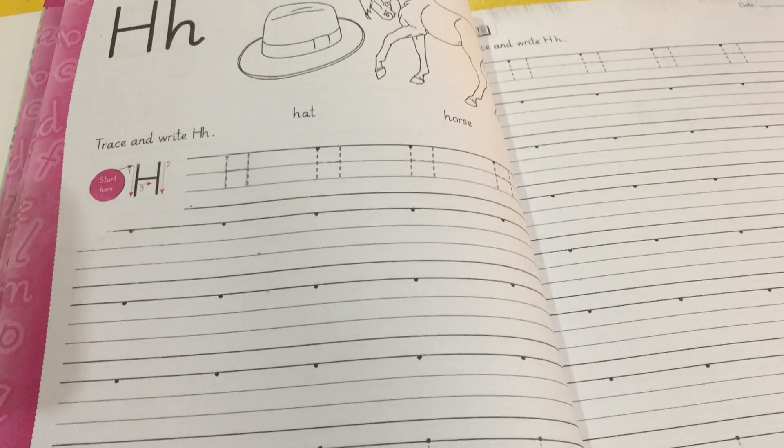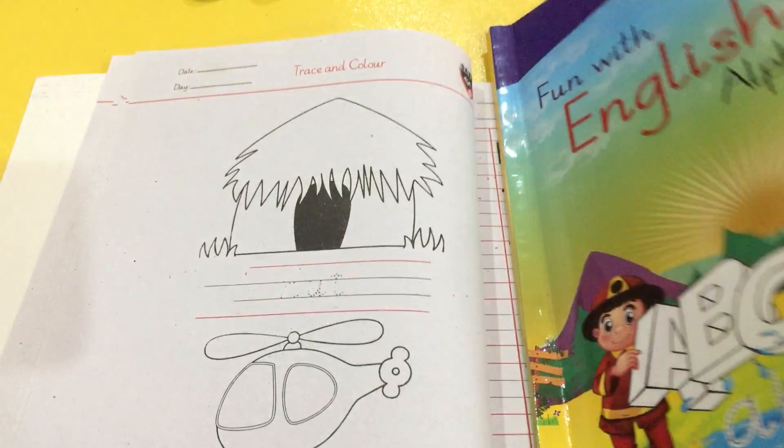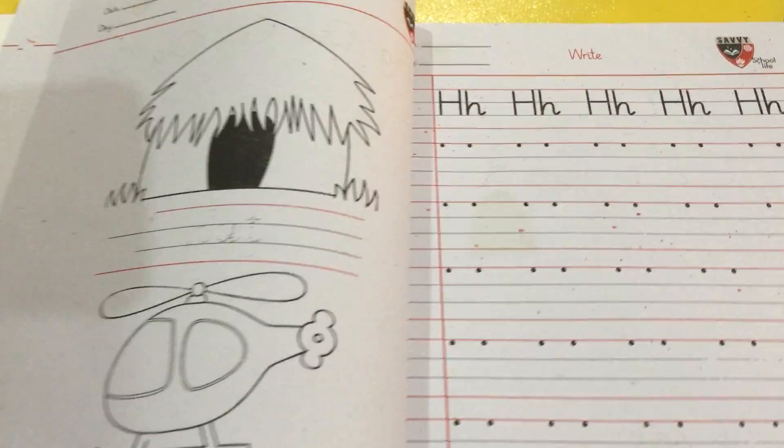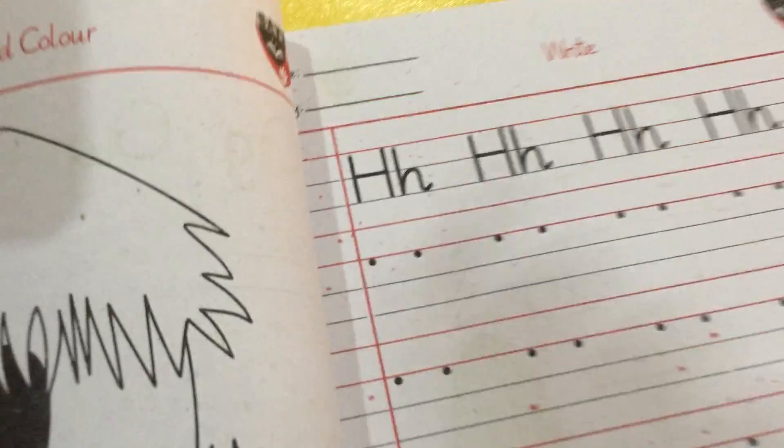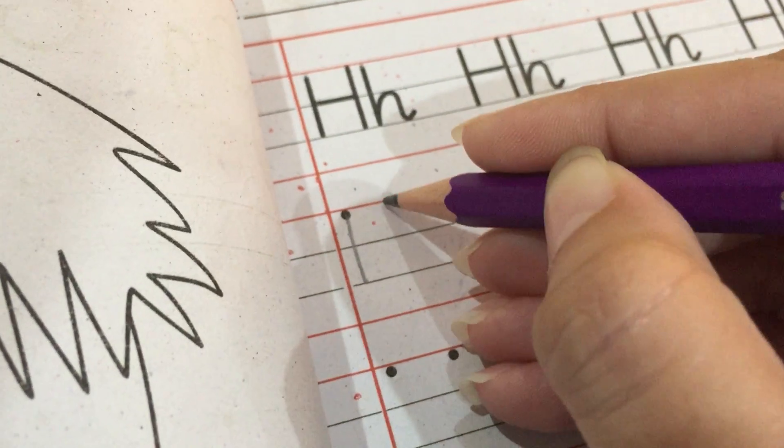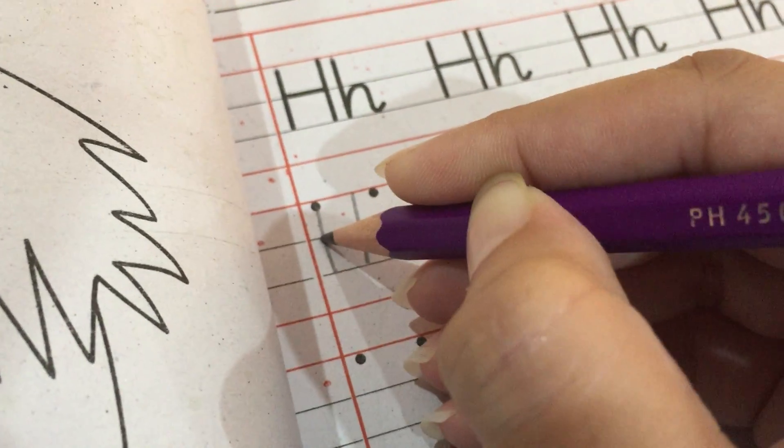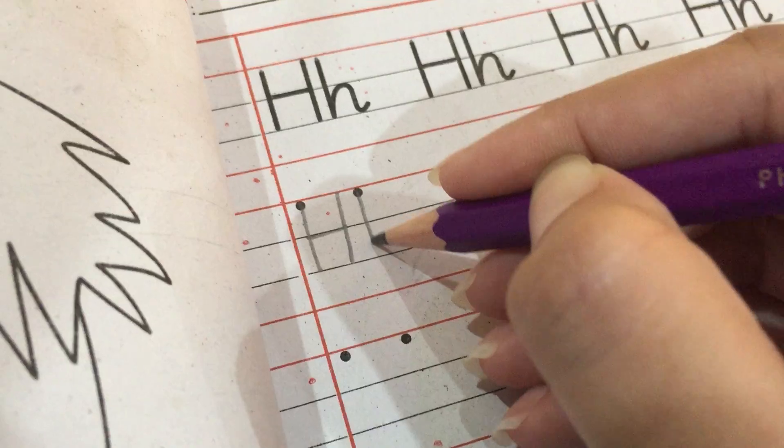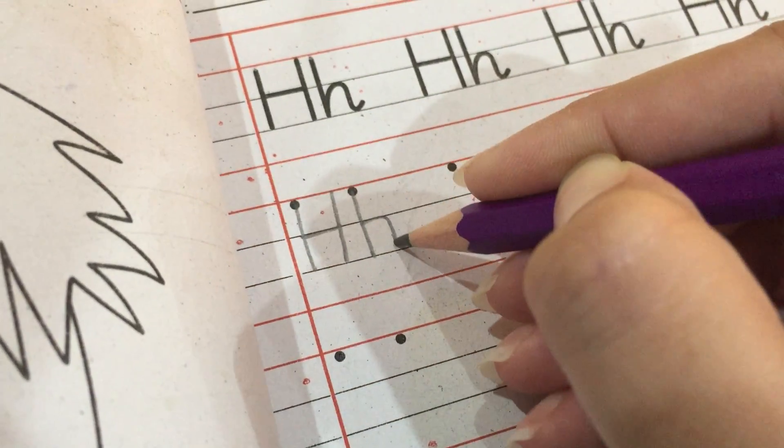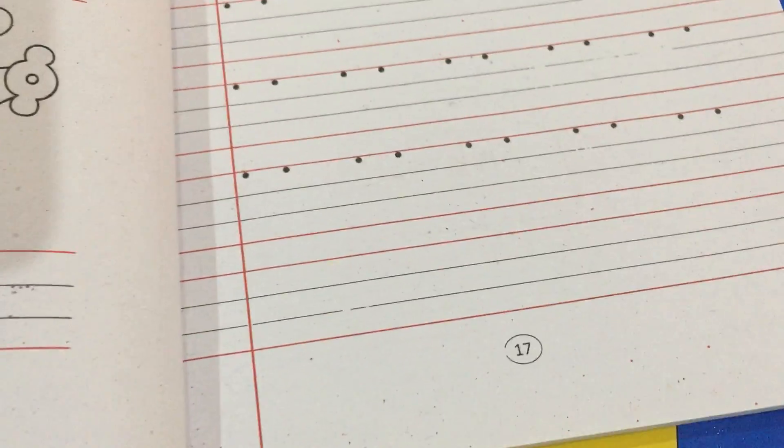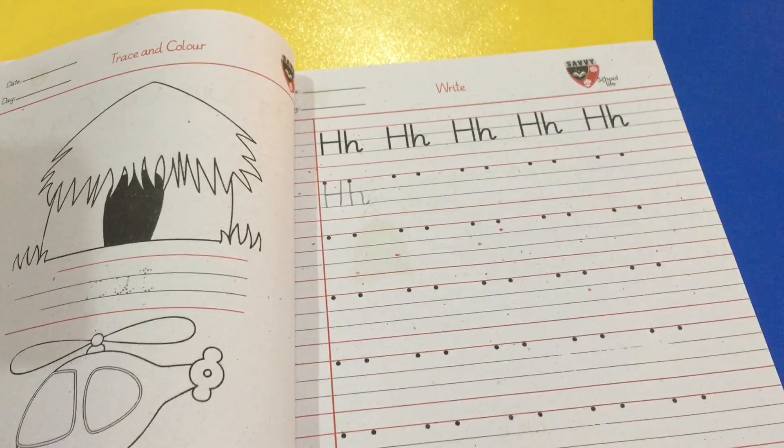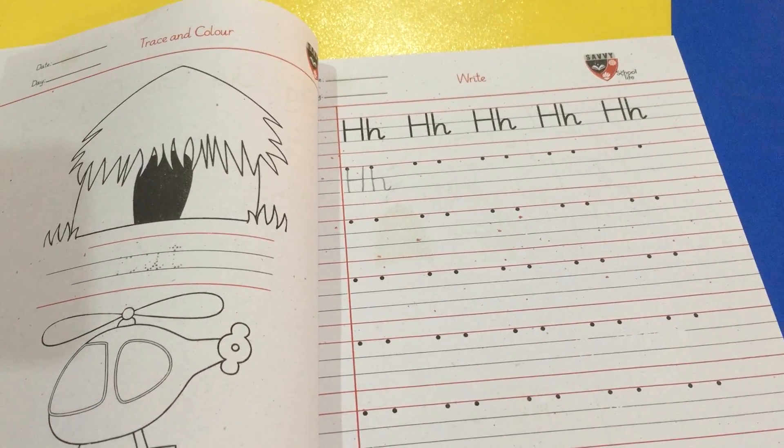Now open your English homework notebook. H. What we write? H. Capital H. Small h. Very good. Page number 16 and 17 is your homework for today. And end class. Allah Hafiz.